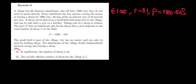Let's look at question 21. We have a village with 20 identical people who all have 1000 euros they do not need to spend directly. There are two options to spend this money: either saving it in the bank or buying a sheep for 1000 euros. Saving yields an interest rate.